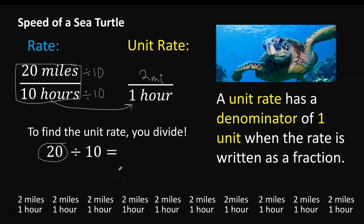So that sea turtle would cover 2 miles every 1 hour. And you would write that unit rate as 2 miles per hour. When I looked it up online, I found that sea turtles cruise at around 1 mile per hour to about 6 miles per hour. But a sea turtle has been recorded as moving as fast as 22 miles per hour.